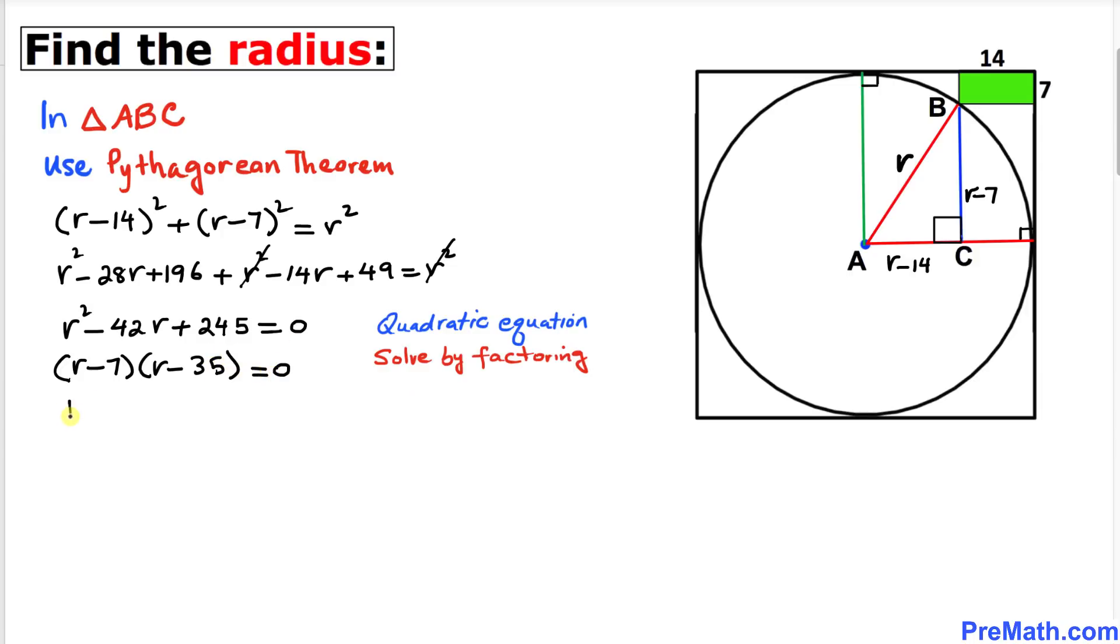Now let's separate them. r minus 7 equals 0 and r minus 35 equals 0. So we got r equals positive 7 value, and here we got r equals positive 35 value.